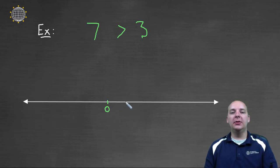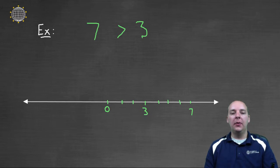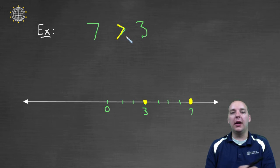On a number line, with zero here, you count up: one, two, three, four, five, six, seven. Here's seven, and here's three. Just look on a number line — seven is farther to the right than three, so seven is greater than three because it's farther to the right on the number line.